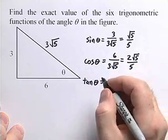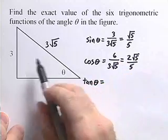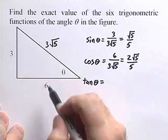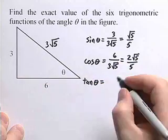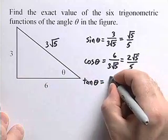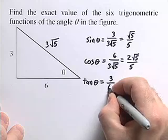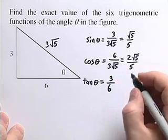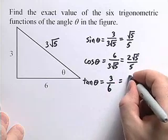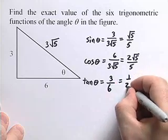The tangent of theta is equal to the opposite side over the adjacent side, so that will be 3 divided by 6, which is equal to 1 half.